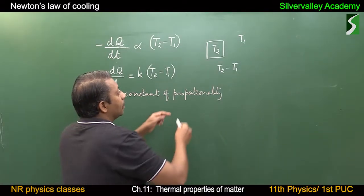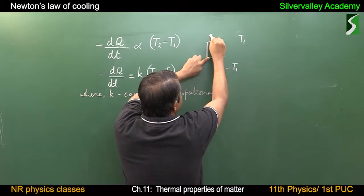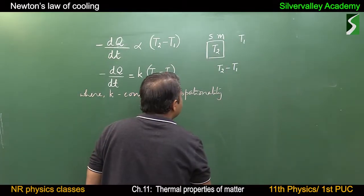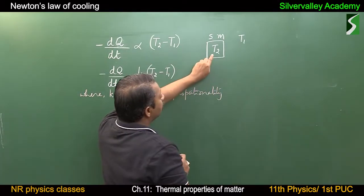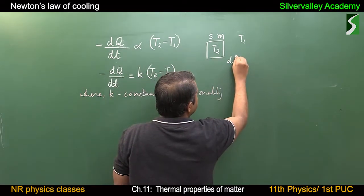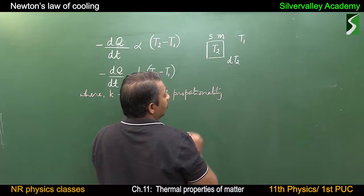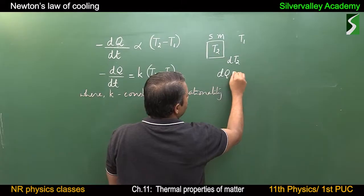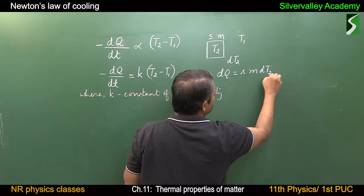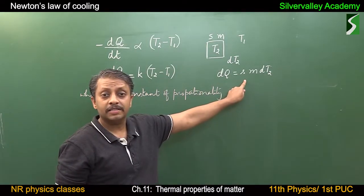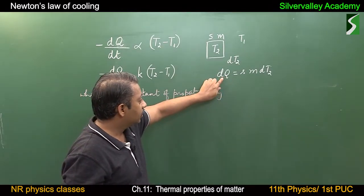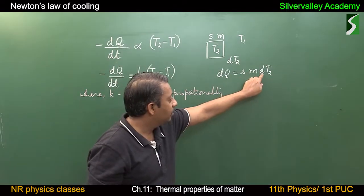Suppose the specific heat of the body is S, the mass of the body is m, and the temperature decreases from T2. The drop in temperature is dT2. Then we can write dQ equals S times m times dT2. This is from the specific heat capacity equation — heat energy required equals S times m times dT.